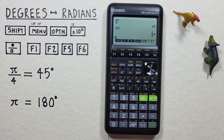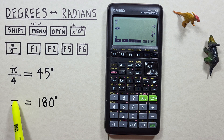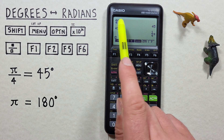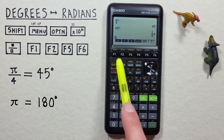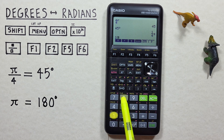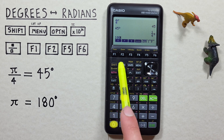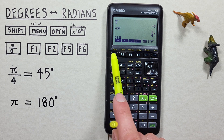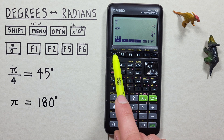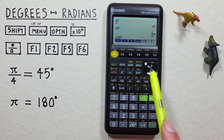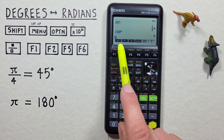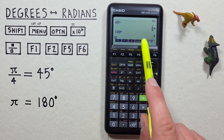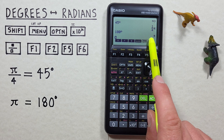Let's look at another example. Let's say we had 180 degrees and wanted to get that in radians. Since we're already set to radians mode, we don't need to change that. All we need to do is enter our 180 degrees, then choose f1 to tell our calculator these are degrees, and press the exe. We see that 180 degrees has converted to pi radians.